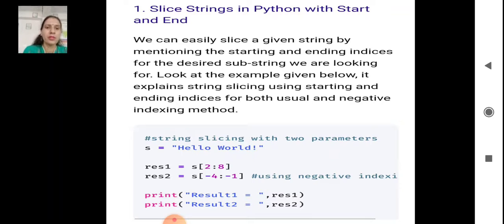Suppose we have a string s equals to 'Hello World'. Now we want to slice from the second index up to the eighth index. The starting value is 2 and the stop value is 8, so we can define res1.